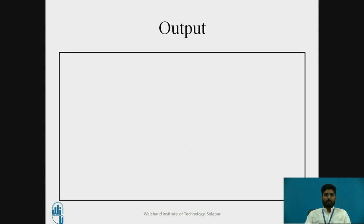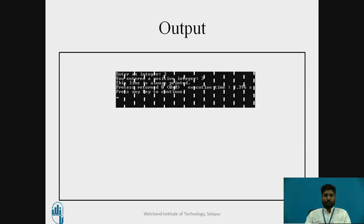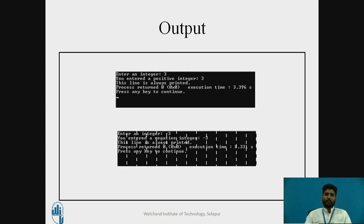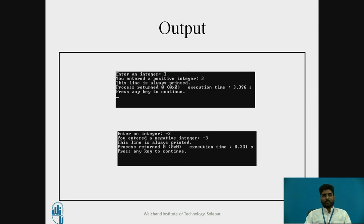Looking at the output of the if-else statement: if I enter the positive integer 3, the output is 'you entered a positive integer 3' and the always-printed line appears. If I enter minus 3, the output is 'you entered a negative integer minus 3' and the always-executed line also appears.